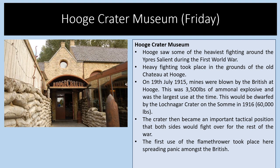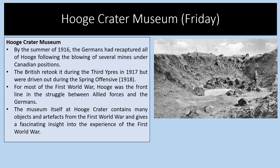We'll also go to the Hooge Crater Museum. Hooge saw some of the heaviest fighting around Ypres during the First World War. On the 19th of July 1915, mines were blown by the British at Hooge — 3,500 pounds of ammonal explosive — the largest use at the time, later dwarfed by the Lochnagar Crater on the Somme in 1916. The crater became an important tactical position that both sides fought over. The first use of the flamethrower took place here. By the summer of 1916 the Germans had recaptured all of Hooge, the British retook it during the Third Battle of Ypres in 1917, but were driven out during the Spring Offensive. The museum contains many objects and artefacts giving a fascinating insight into the First World War.